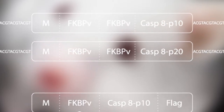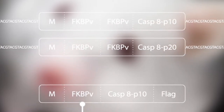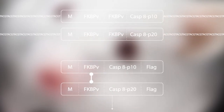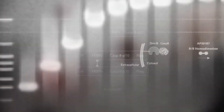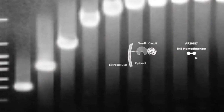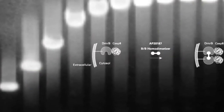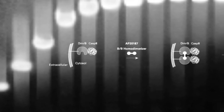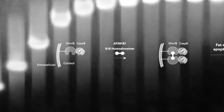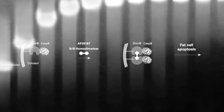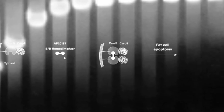They created a clever construct where the P20 and P10 catalytic domains of the apoptosis-inducing protein caspase-8 were each fused to a dimerization domain. This mutant dimerizes upon binding the ligand AP-20187, available exclusively from Clontech as the BB homodimerizer.